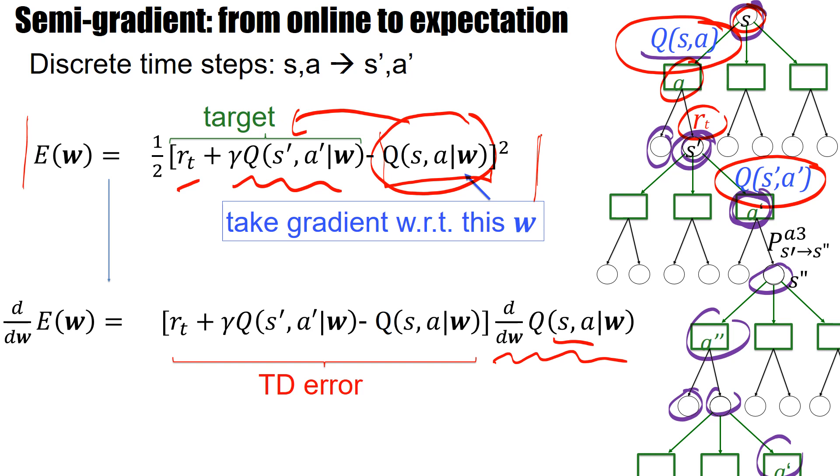So what we should do really is to have here an expectation sign of the whole expression. And then this expectation sign will also appear down here. Now we can implement this kind of expectations by taking a sum over many transitions. Many transitions from an arbitrary starting state s, an arbitrary action a, the reward that we get to next state to next action. So not just one transition that we had before in the online version, but a batch of all possible transitions would be a good approximation of the expectation.